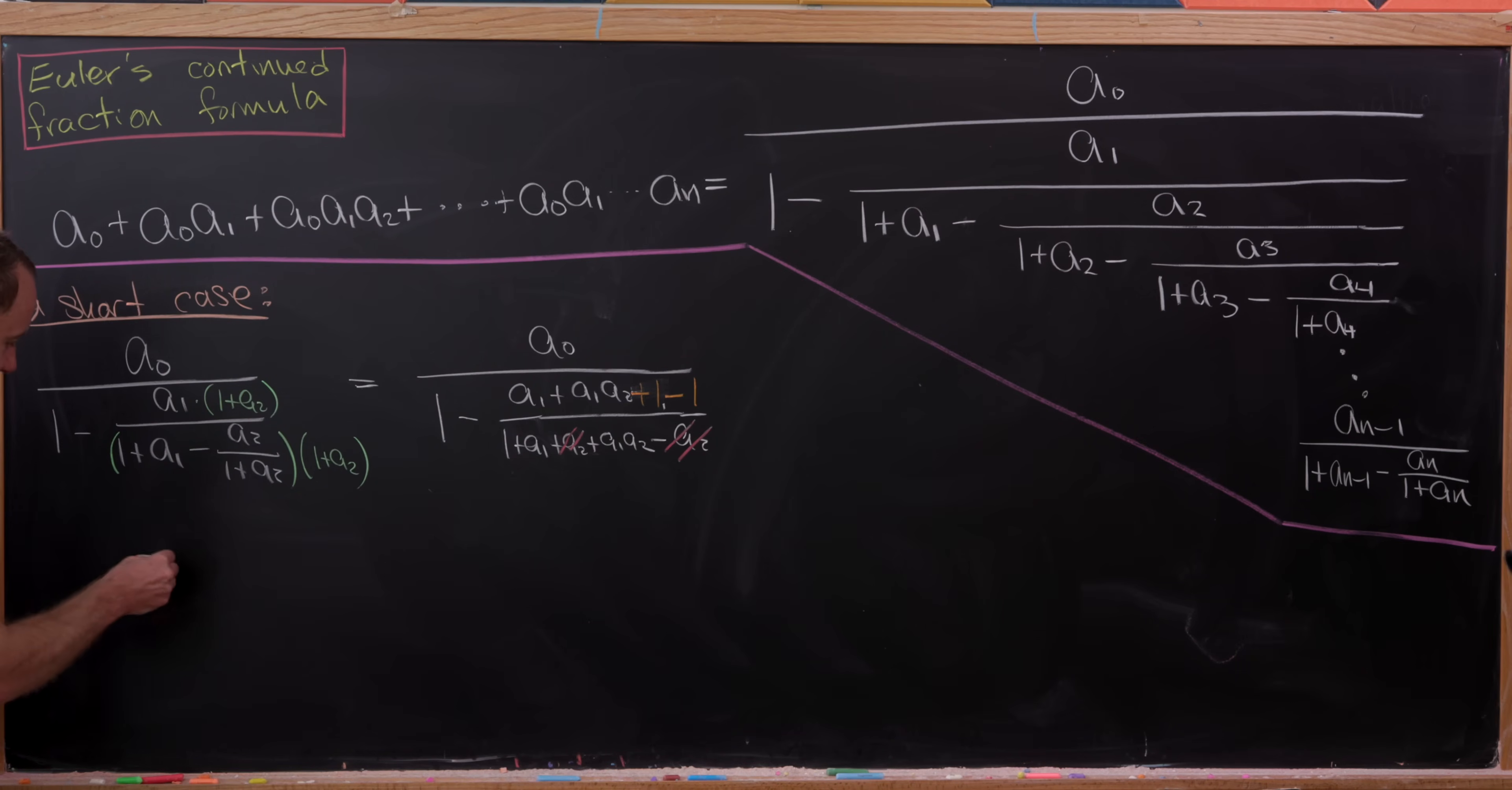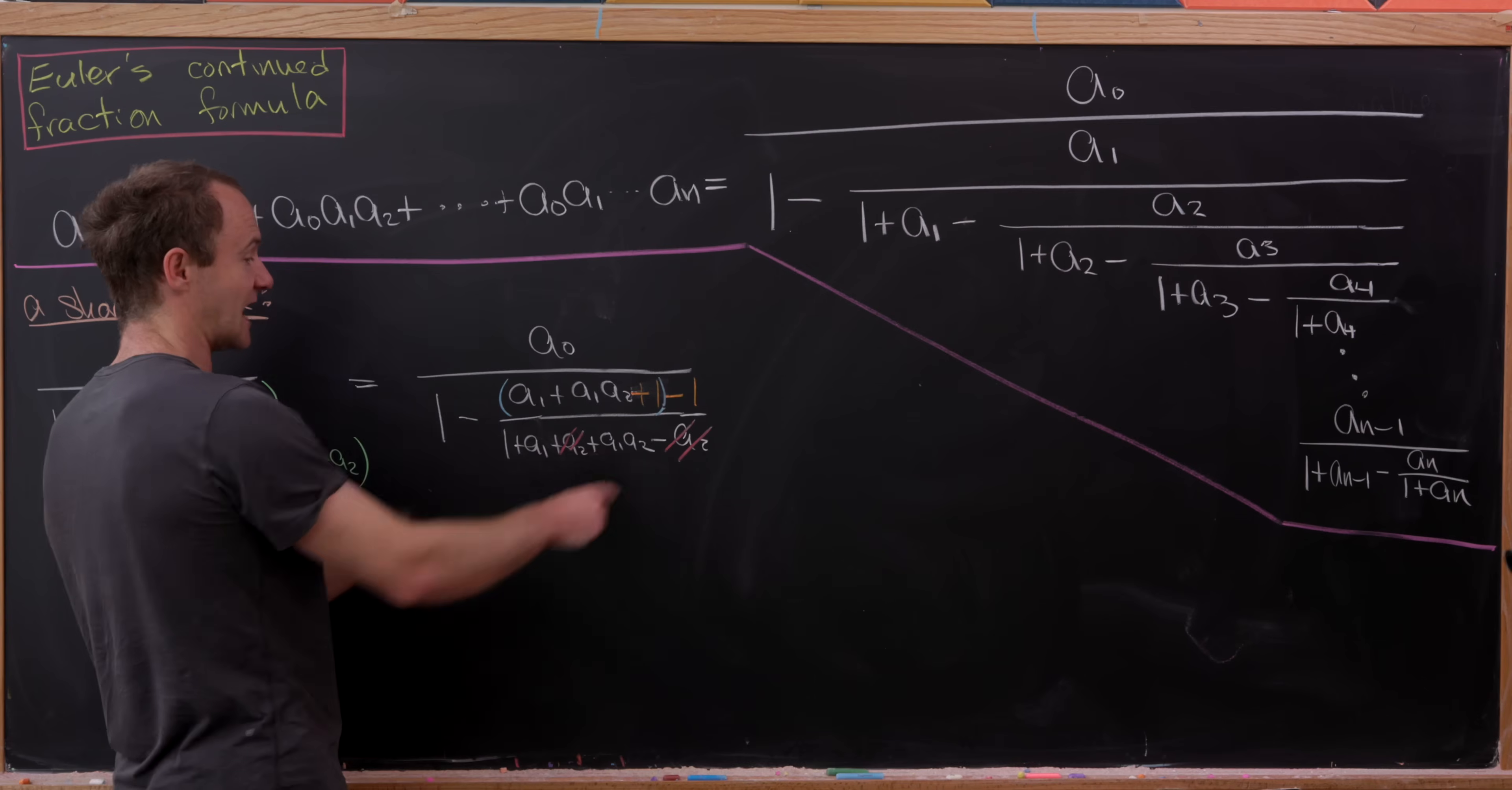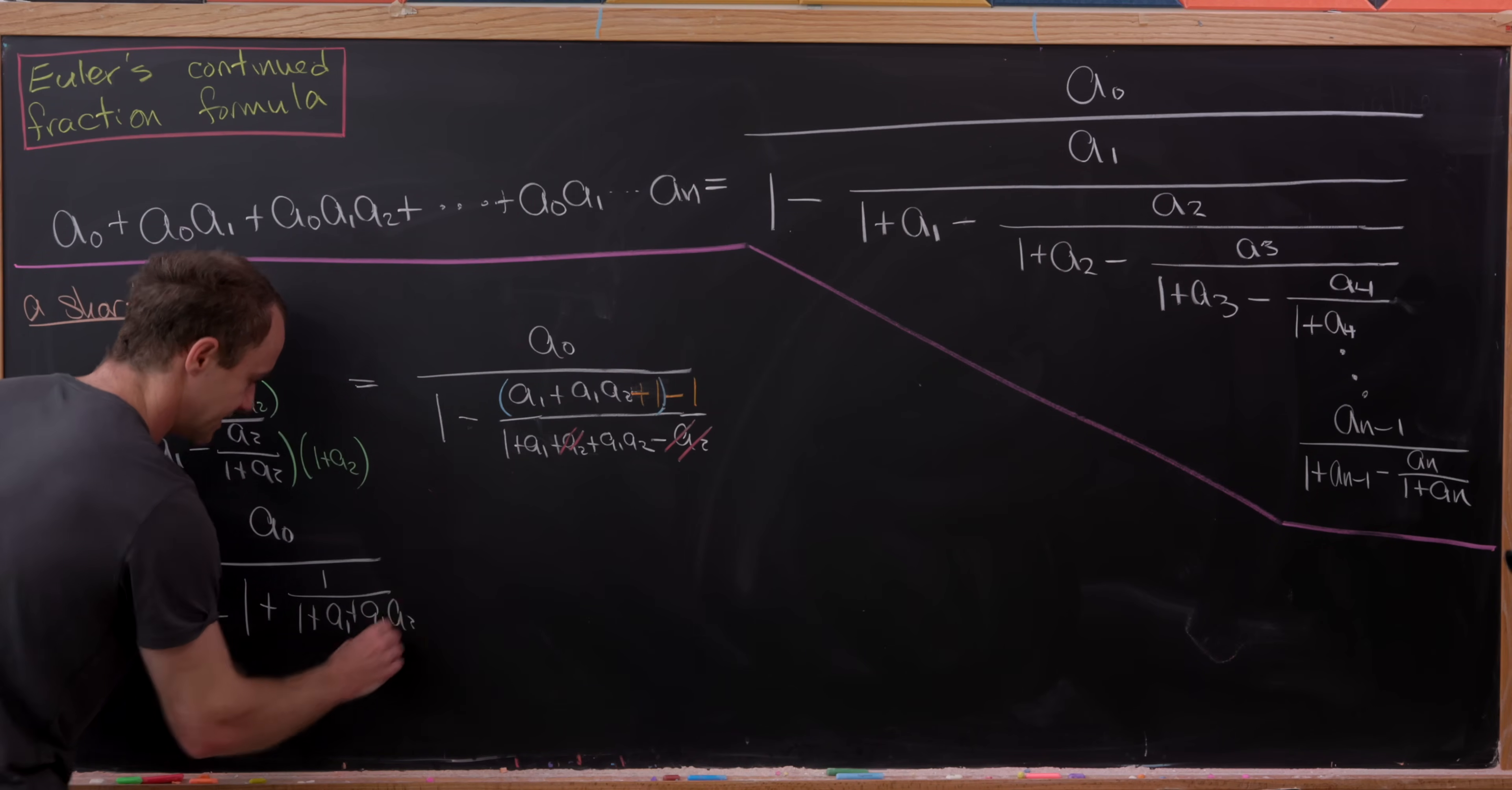So let's see how this might simplify. So we still have a0 on top of everything. And then we have one minus, well, let's see, this stuff that I'm putting blue parentheses around will cancel with this denominator down to one. Because notice that what's in blue parentheses is exactly what's in the denominator. So that'll be one minus one. And then we'll have minus negative one over that denominator. But that's simply plus one over that denominator. So 1 plus a1 plus a1 times a2.